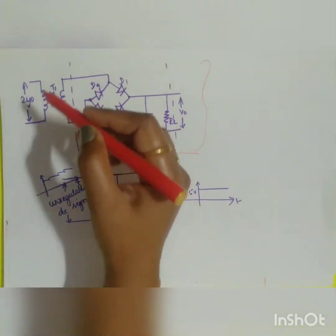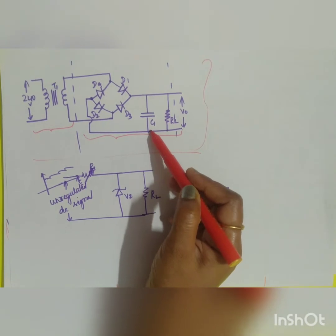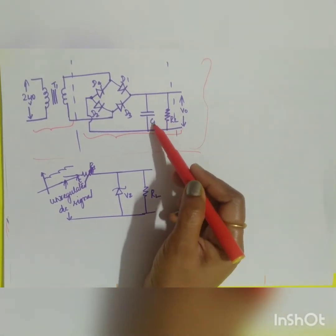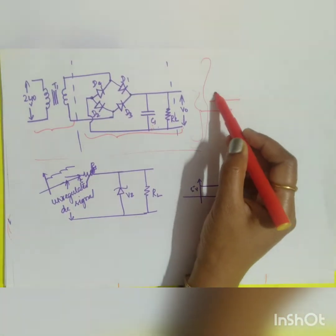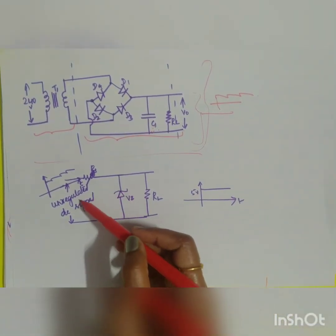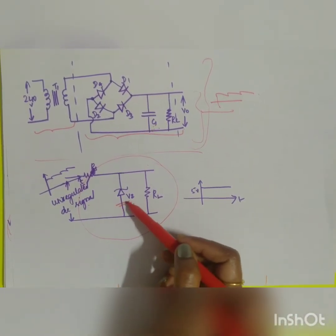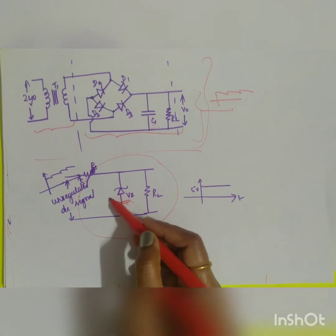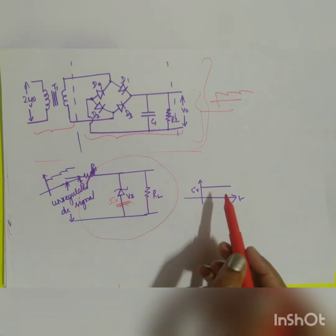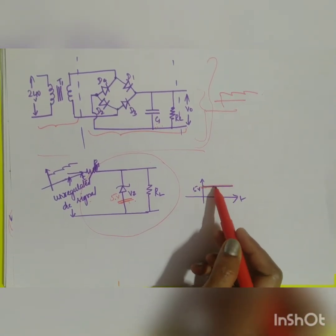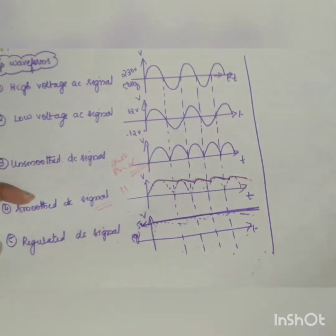This diagram shows the full circuit. First is the mains transformer, then the bridge rectifier with the reservoir filter capacitor, giving a smooth DC signal. This unregulated DC signal is fed to the voltage regulator, which uses a Zener diode. If the breakdown voltage is, say, 5 volts, the output will always be maintained at 5 volts. These are the important points for your 7-mark question.